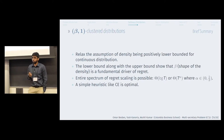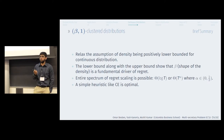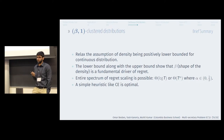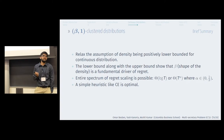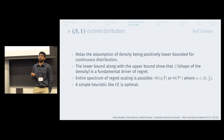To recap: for the beta-1 cluster distribution, we relaxed the assumption of the density being positively lower bounded. We showed that the shape parameter beta is a fundamental driver of regret, and in fact an entire spectrum of regret scalings is possible. Moreover, a simple policy like certainty equivalent is in fact optimal.